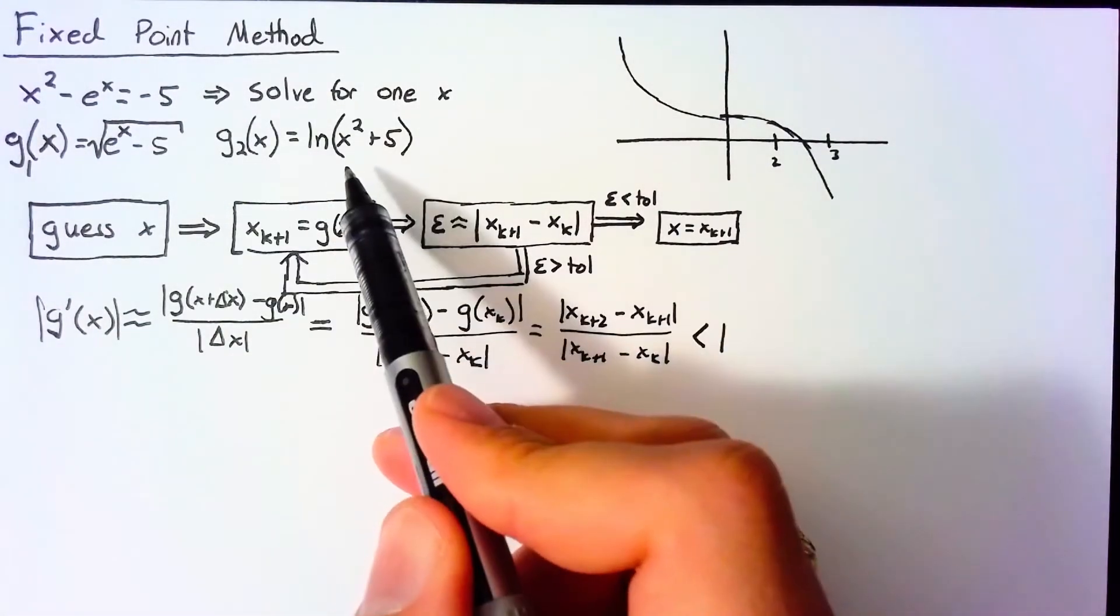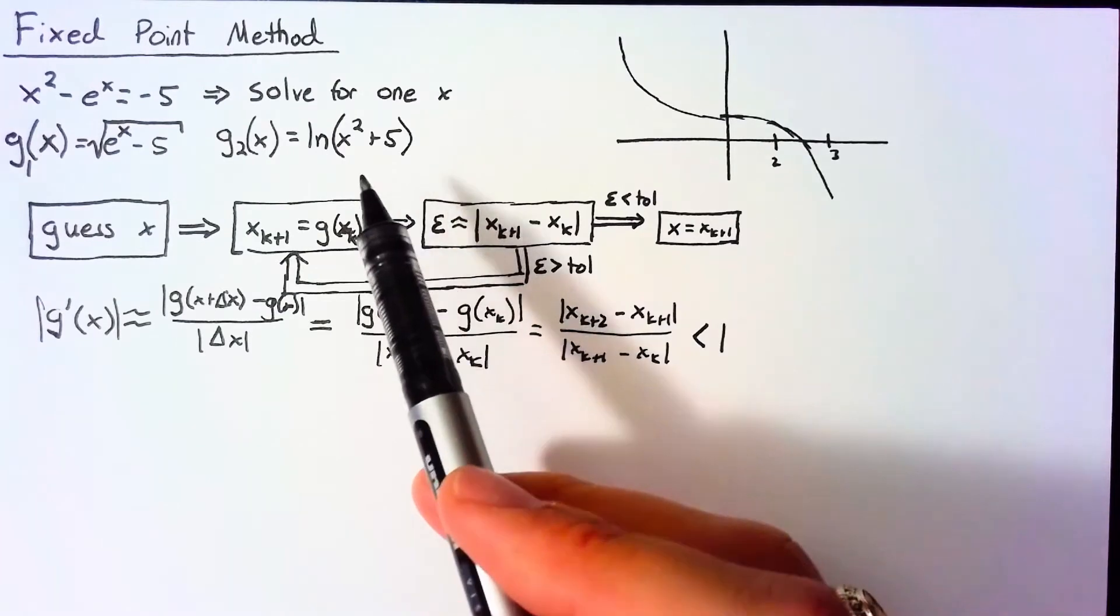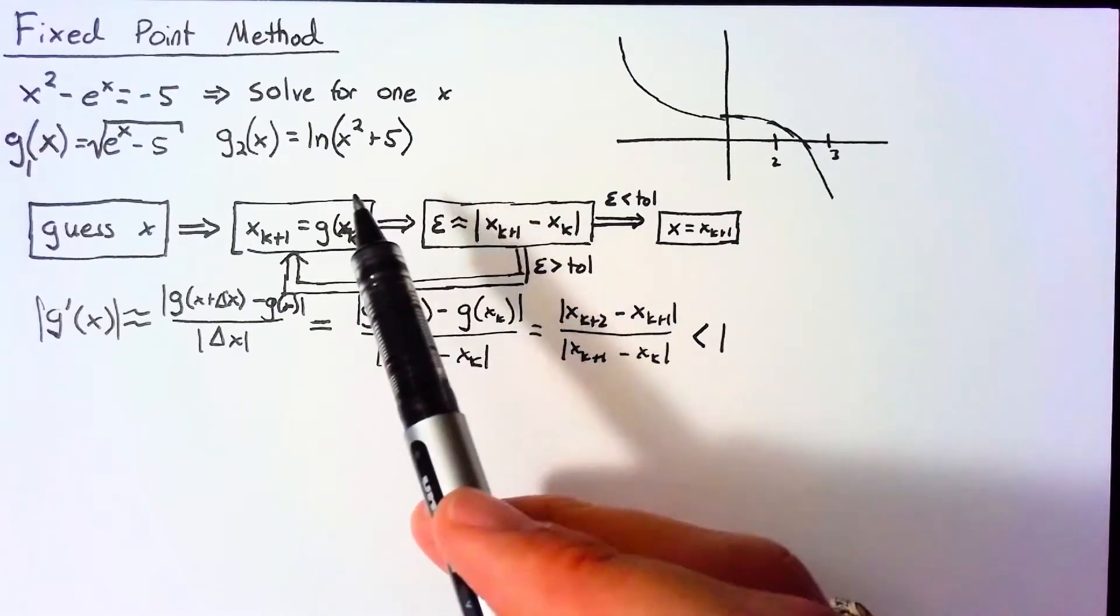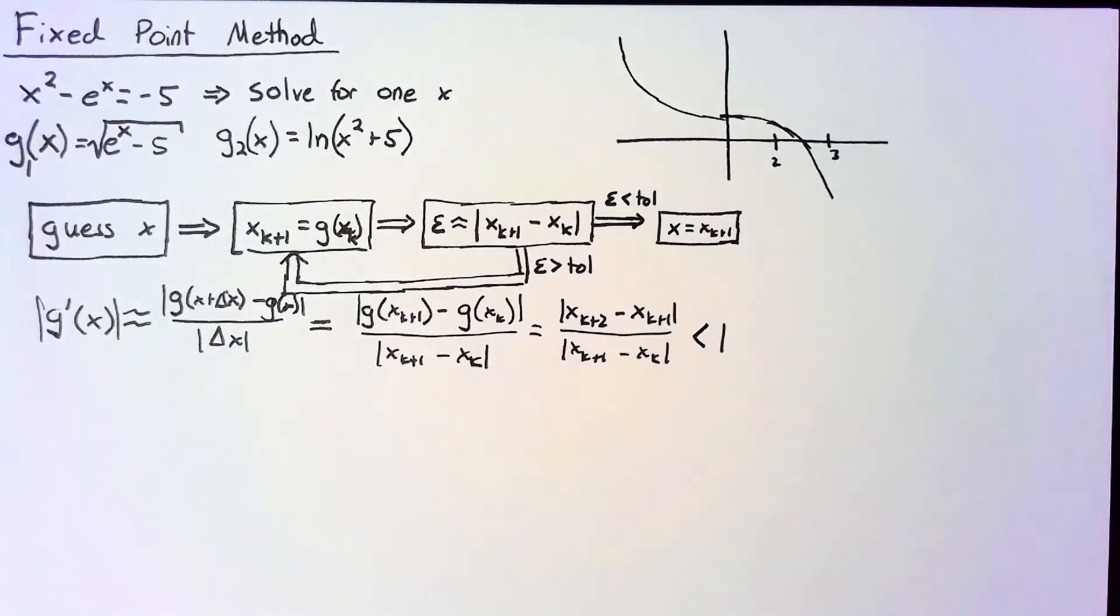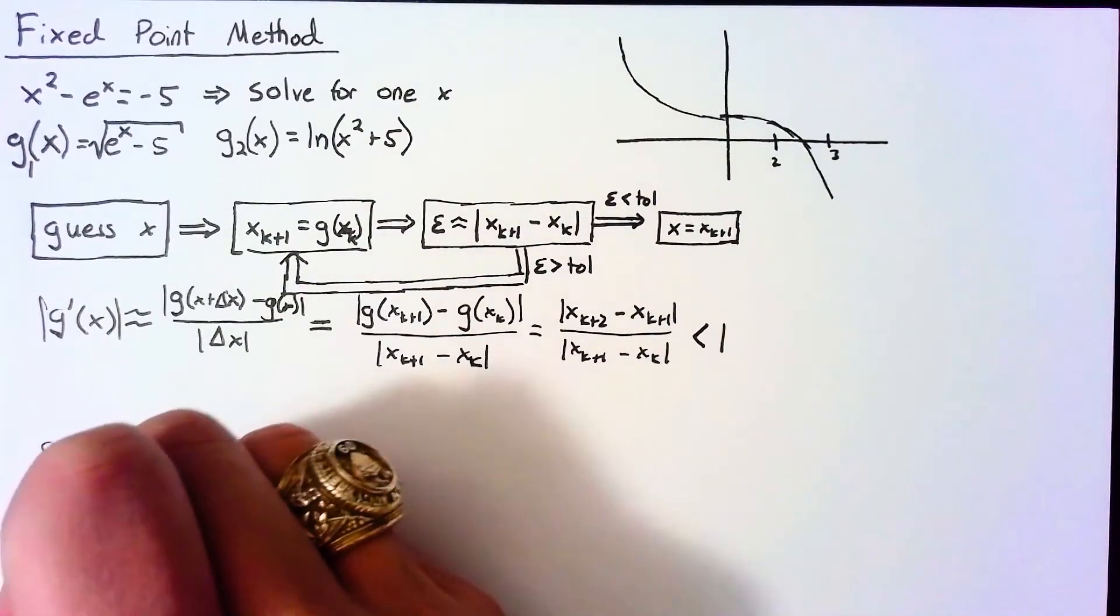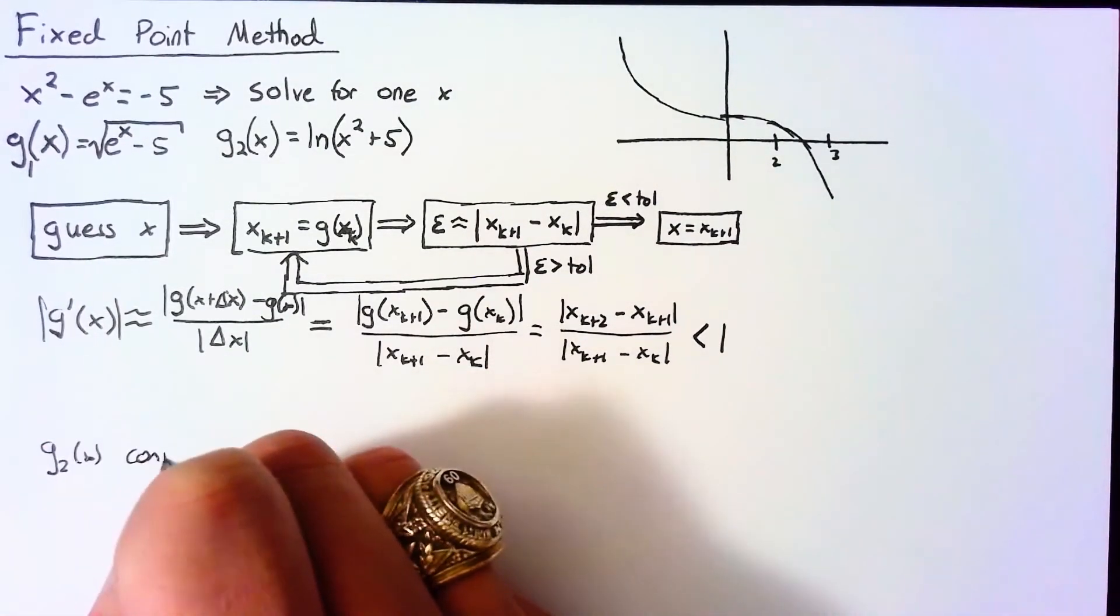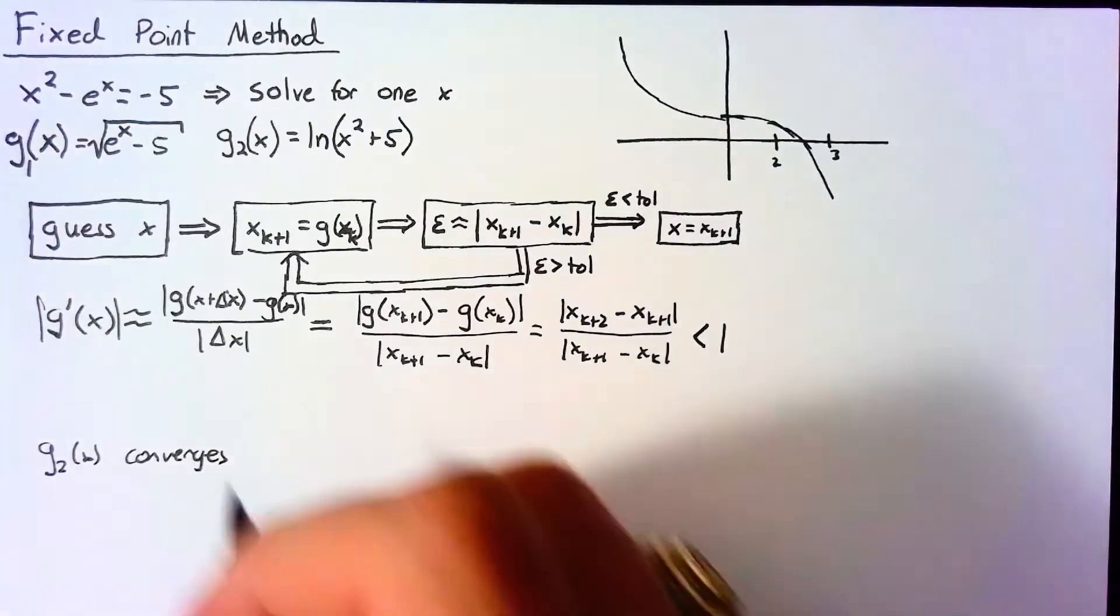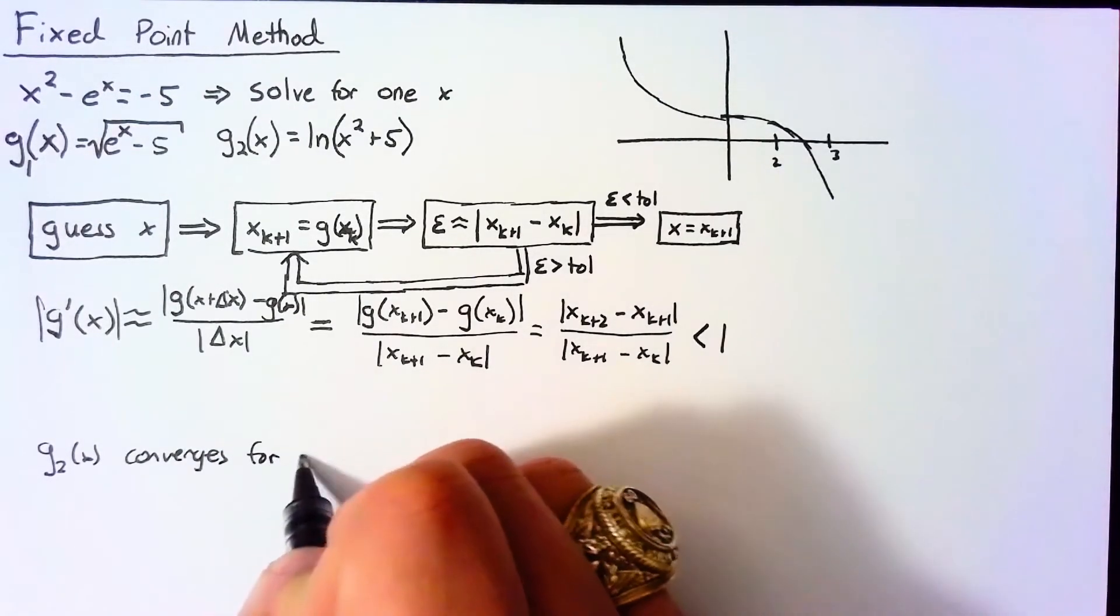If we calculate the derivative of g₂(x), we will find actually that this is less than 1 for all values of x. And if we run this out numerically, we find that g₂(x) actually converges for all values of x.